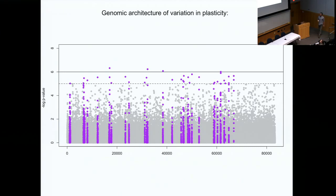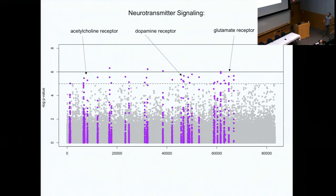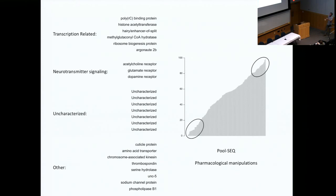We can use our genome annotation to ask what genes are linked with these significant SNPs. We found two main categories. The first were transcription-related — genes involved in modifying gene expression. But really excitingly, we found a group of neurotransmitter genes that seem to vary, and in particular, a SNP tightly linked to or inside the dopamine receptor gene was associated with variation in plasticity. There are only two dopamine receptors in the aphid genome. Our genome is not very well annotated, so there are many genes we don't know the function of, and we have a lot of work left to validate these mechanisms.